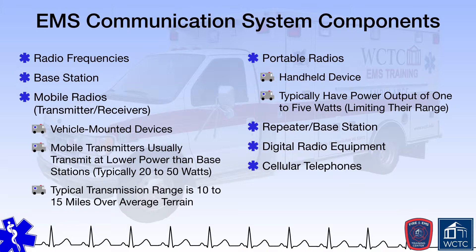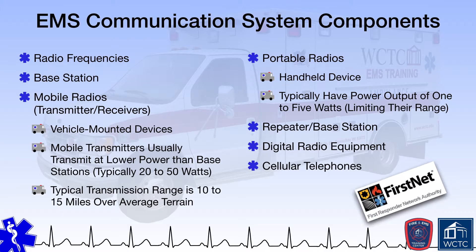In 2012, Congress authorized the Department of Commerce to create an independent authority called FirstNet, short for the First Responder Network Authority, to develop, build, and operate a nationwide broadband network for first response agencies. This network has since been developed by AT&T and is available for use by public safety agencies across the country.